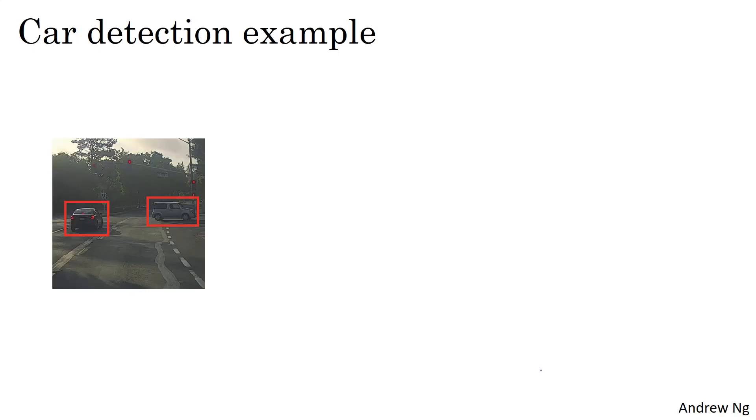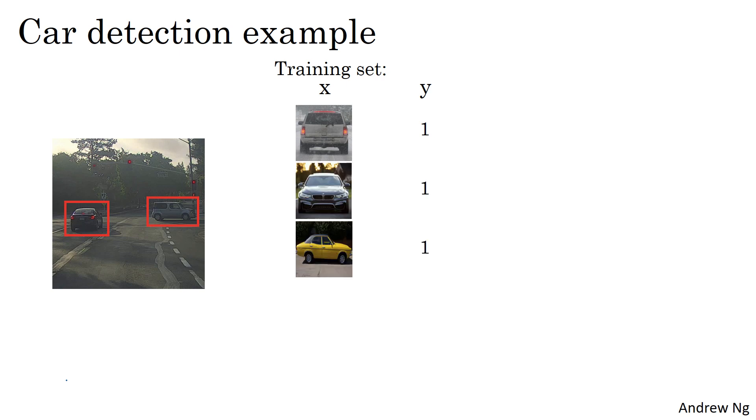Let's say you want to build a car detection algorithm. Here's what you can do. You can first create a labeled training set, x and y, with closely cropped examples of cars. So this is an image x, there's a positive example as a car, as a car, and then there's not a car. For this training set, you can start off with closely cropped images, meaning that x is pretty much only the car. You take a picture and crop out anything else that's not part of a car, so you end up with a car centered in the entire image.